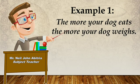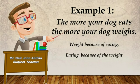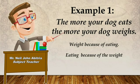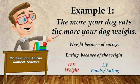In this situation, we need to know what is changing because of something. Is it weight changing because of eating, or eating changing because of the weight? Obviously, the correct analysis is that weight is changing because of eating. So, we can say that weight is our dependent variable and eating is our independent variable.